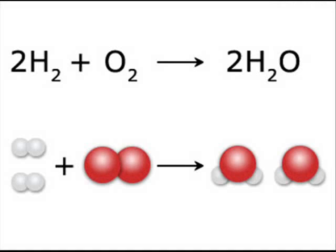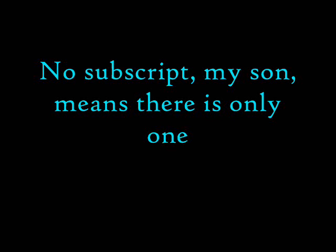To balance chemical equations, son, count the elements on both sides. The number on both sides must be the same — you will not know until you've tried. When you know how much you'll need, you can hold your head up with pride. No subscript, my son, means there is only one. No subscript means there is only one.